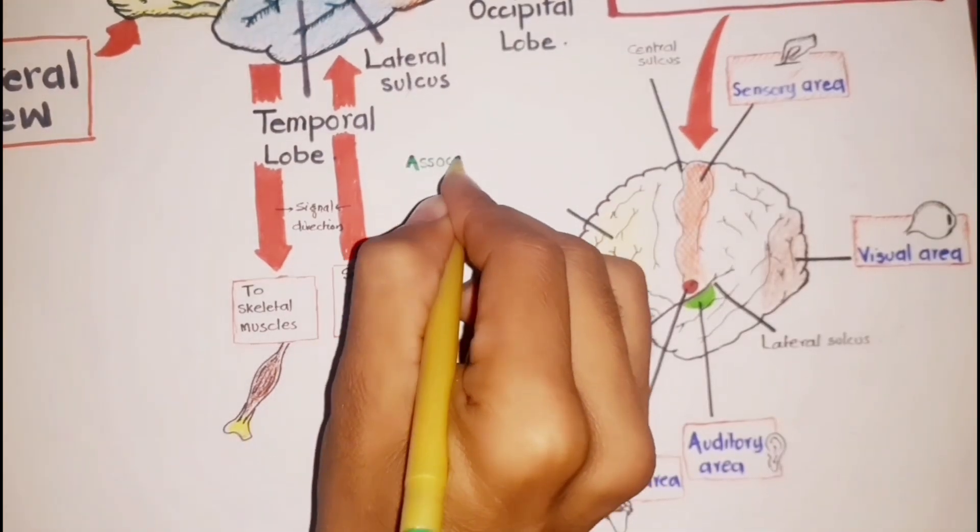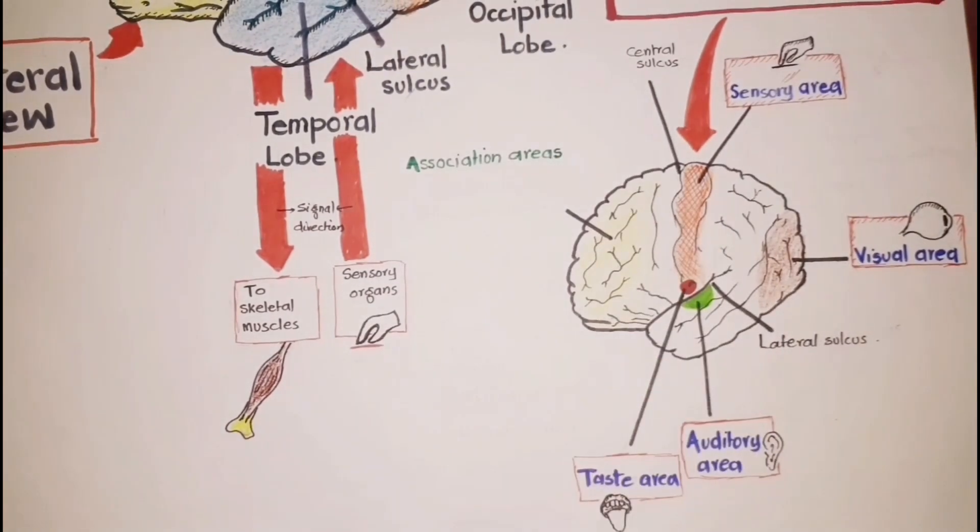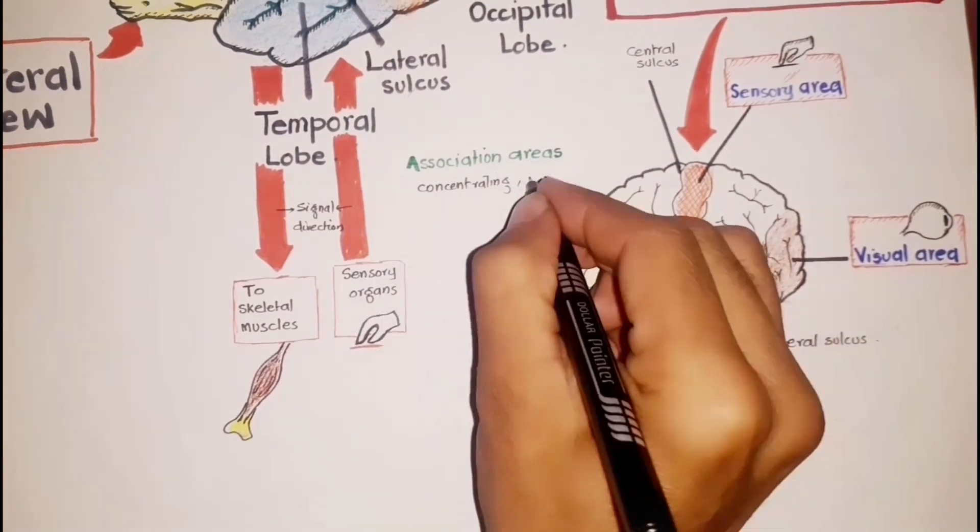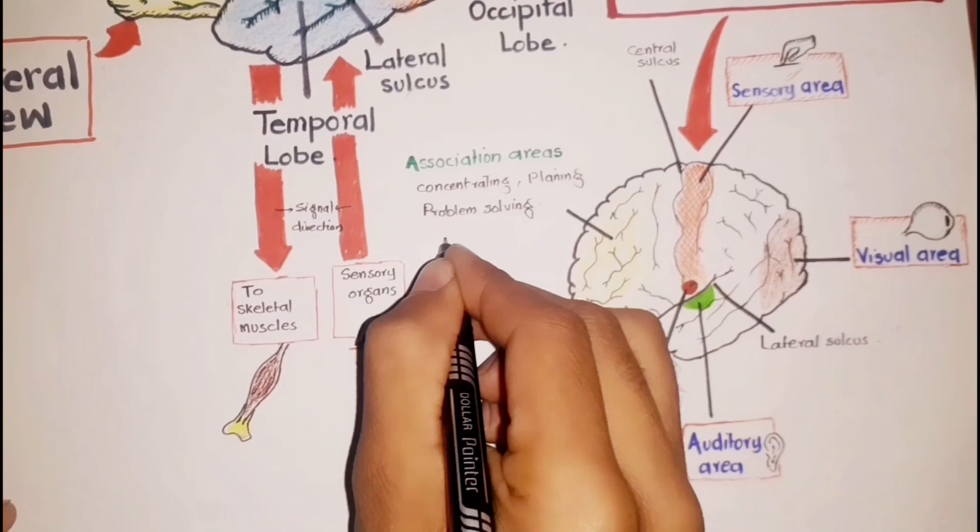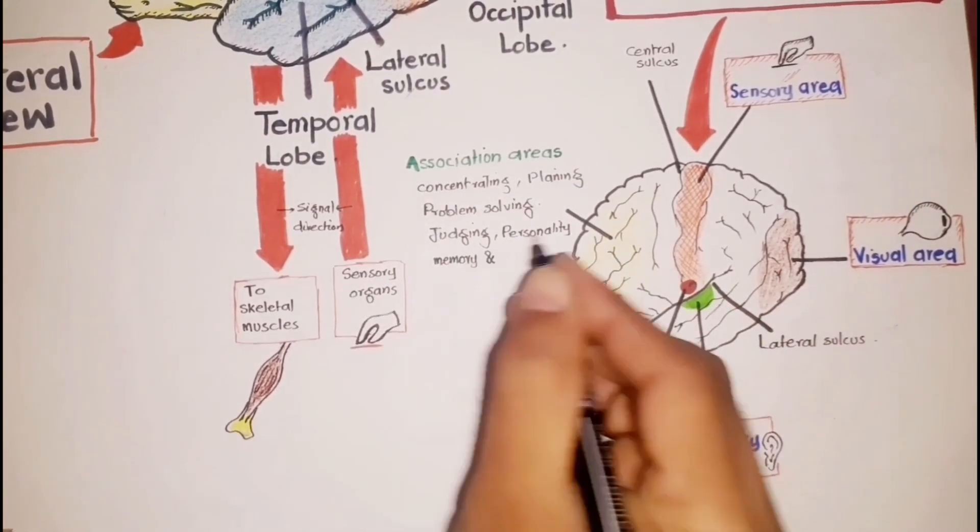The association areas of the frontal lobes control a number of higher intellectual processes. These include concentrating, planning, complex problem solving, judging, personality, memory, and intelligence.